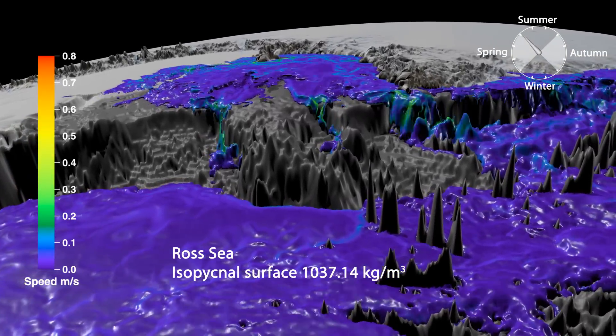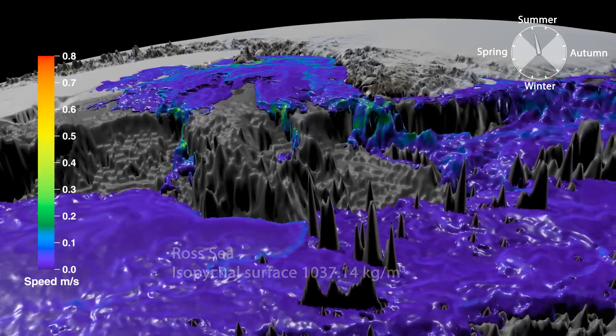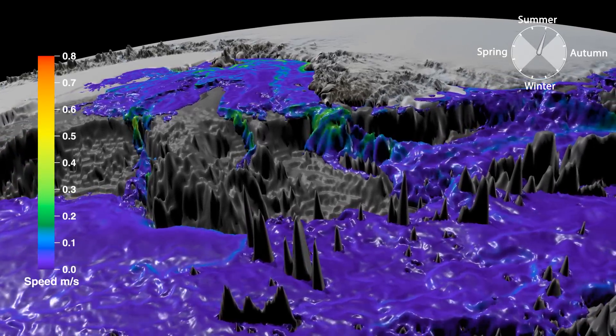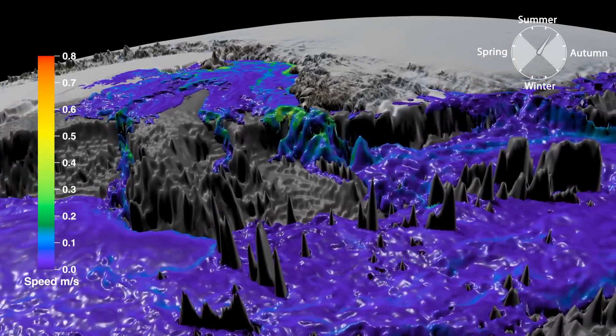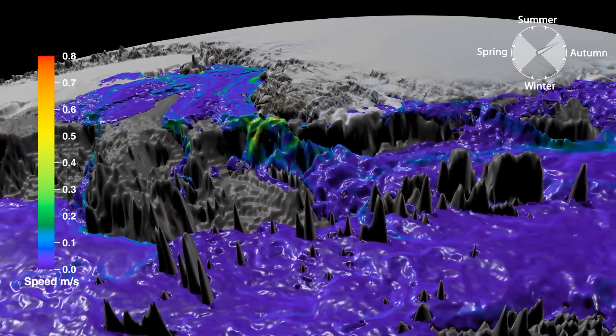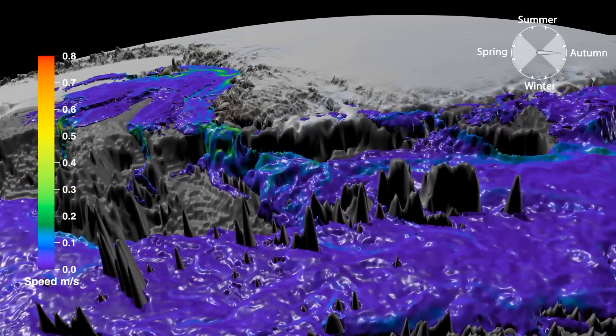As this water cascades downward, it is pushed westward by the Earth's rotation and mixes with surrounding waters that are warmer and less salty, and therefore less dense.